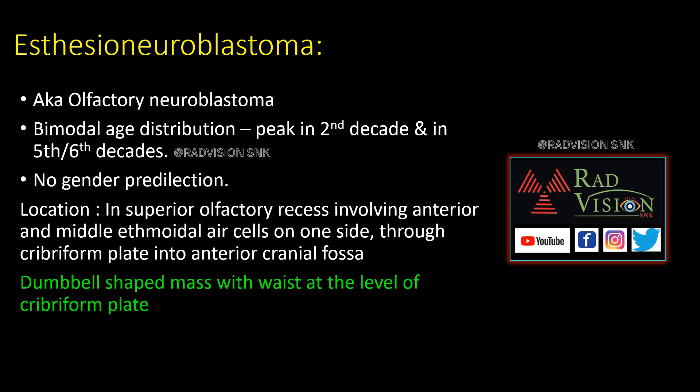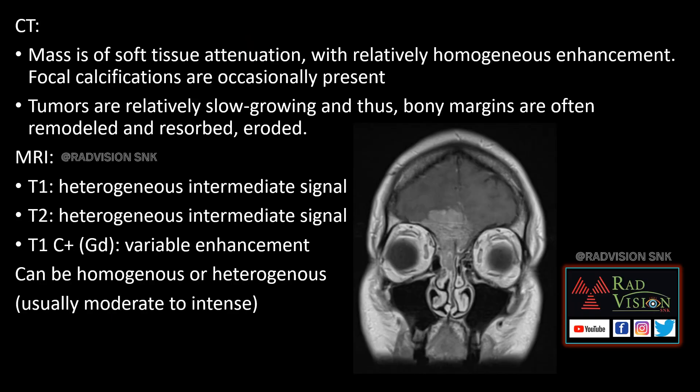Esthesioneuroblastoma has a bimodal age distribution. The most common location is at the superior olfactory recess, giving a dumbbell-shaped mass with a waist at the level of the cribriform plate. On CT, the mass is of soft tissue attenuation with focal calcification. Bony margins are often remodeled or eroded. On MRI, both T1 and T2 show heterogeneous intermediate signal intensity. On post-contrast, variable enhancement which can be homogeneous or heterogeneous is seen.